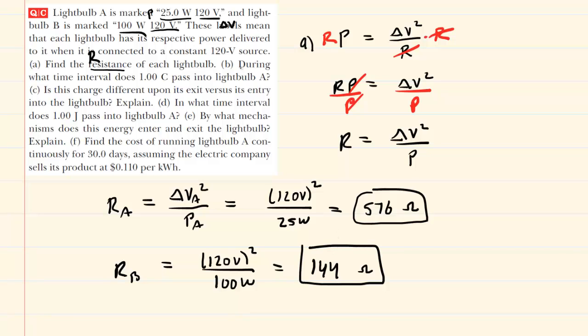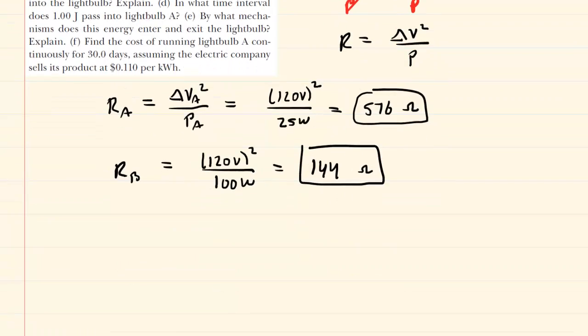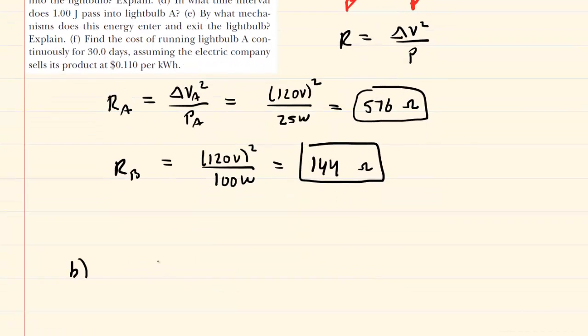In part B, we are asked during what time interval does one coulomb pass into the light bulb? Now, one coulomb could be represented by delta Q is the typical symbol, and we're asked to find a time interval. So that would be delta T. So we need a relationship between delta T and delta Q. Now, we actually know that the current that passes through the bulb would equal the amount of charge going through the bulb divided by the time interval.